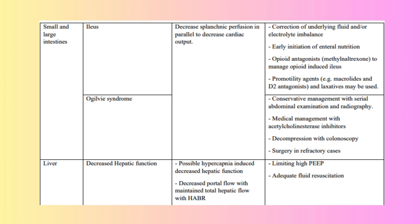Common GI Disorders in ICU Patients: GERD is frequent due to decreased lower esophageal sphincter pressure, aggravated by medication and mechanical ventilation. Gastroparesis affects up to 40-45% of ICU patients, causing delayed gastric emptying. Ileus, hypomotility of the intestines, is commonly linked with surgery, sepsis, opioids, and critical illness. Ogilvie's Syndrome, acute colonic pseudo-obstruction, is characterized by colonic dilation without mechanical obstruction. Diarrhea is common, especially due to enteral feeding, antibiotics, and hypoalbuminemia.